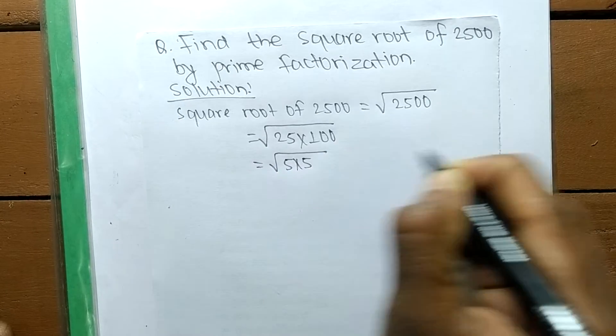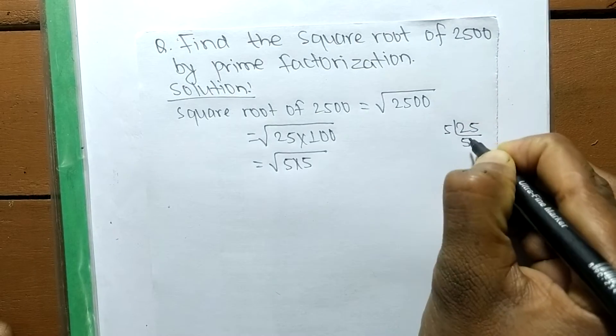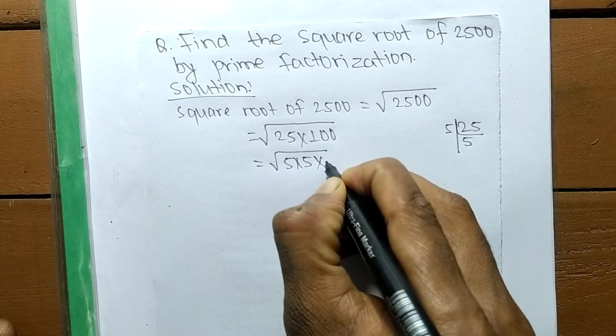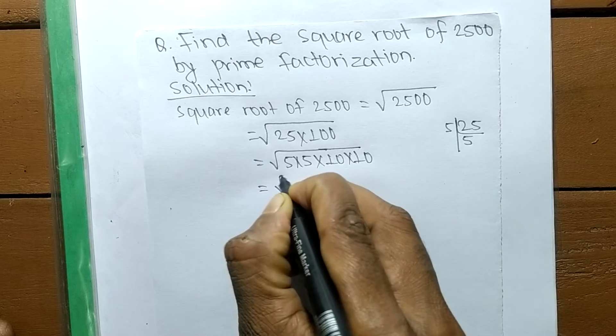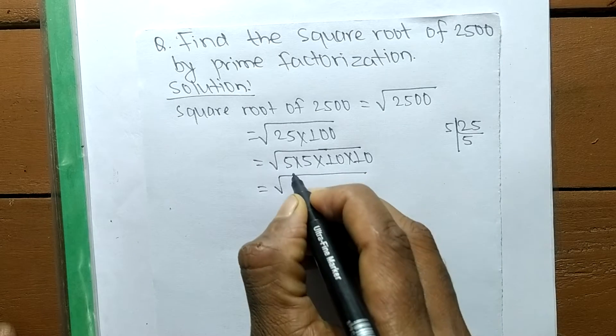Likewise, 100 means it is 10 times 10. Since we are finding a square root, we make the square of numbers. So 5 times 5 means it is 5 squared, and 10 times 10 means it is 10 squared.